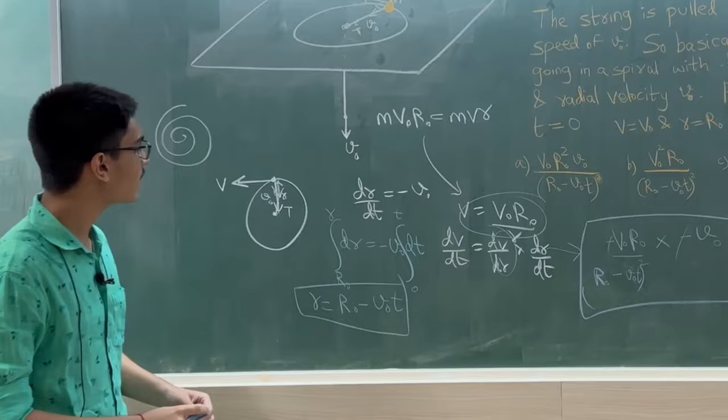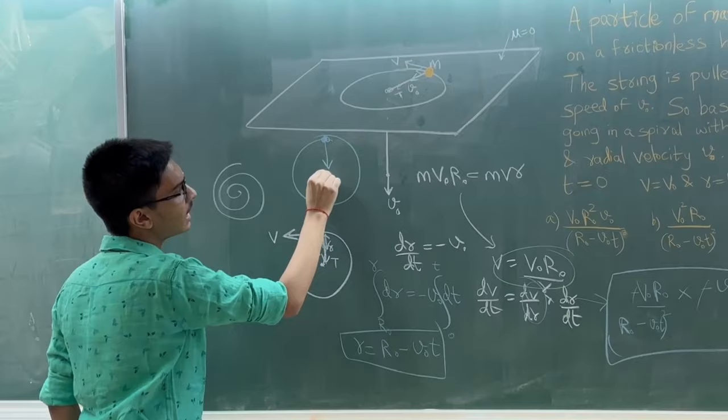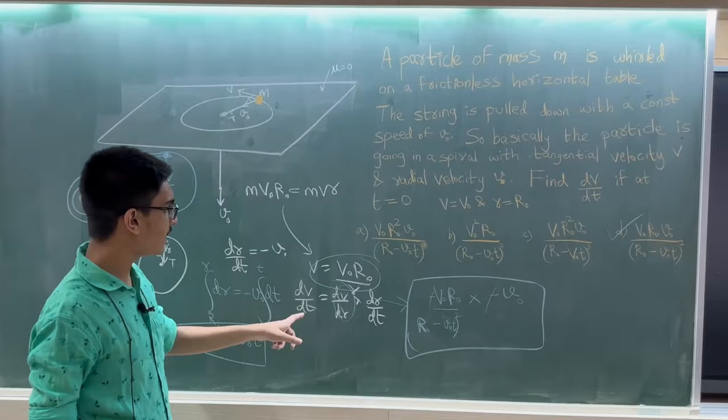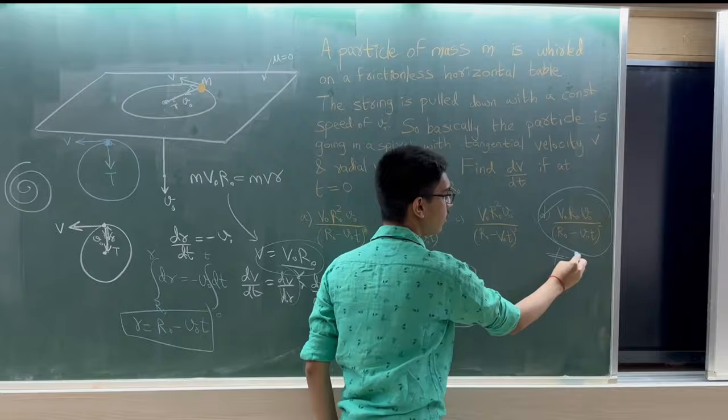Let's see. The particle at any instant has tension like this, and tangential velocity is v. We have calculated the value of dv/dt. The value of dv/dt is this, which is definitely non-zero.